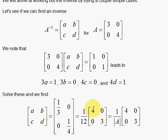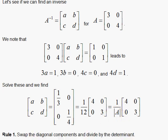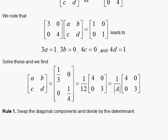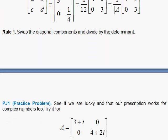Now if I pull out a 12 in the denominator, then I have 4, 0, 0, 3. And I notice that that's swapping the diagonal components and putting the determinant out here in the denominator out in front. So I come up with rule 1, a possible rule 1 that might apply in general. For a practice problem, you try to see if this works when you have complex numbers.